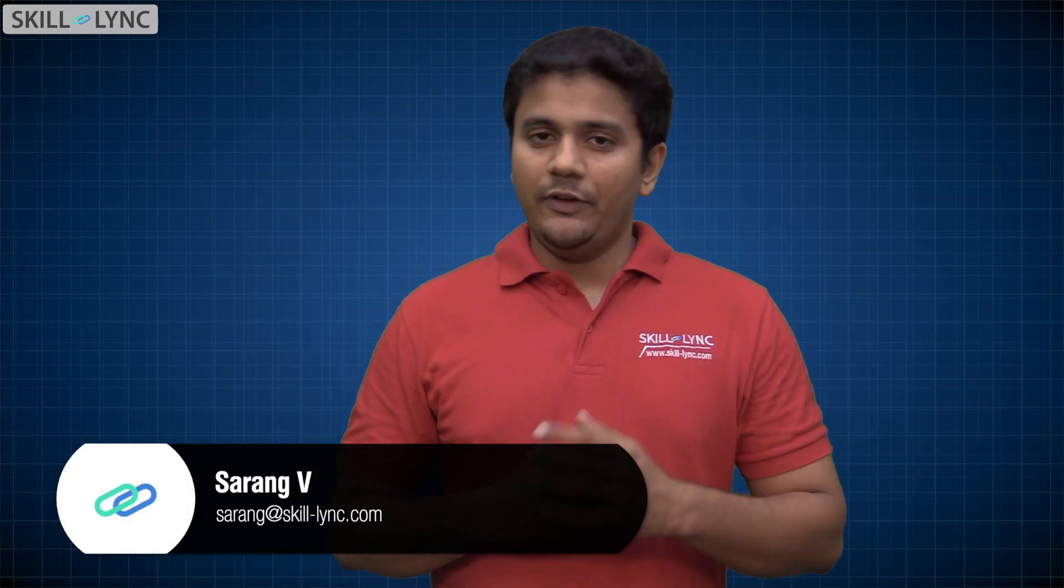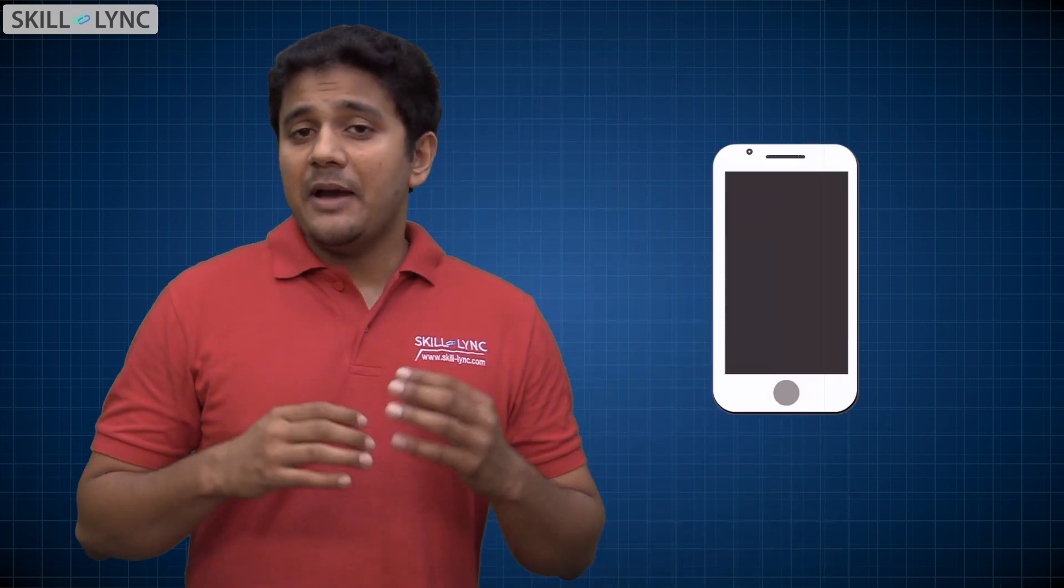When you buy a smartphone, the first thing you check is the specifications. You would check the battery capacity, camera resolution, storage capacity, processor speed, etc. If you check the processor speed in your smartphone, you would see that it is mentioned in Gigahertz.